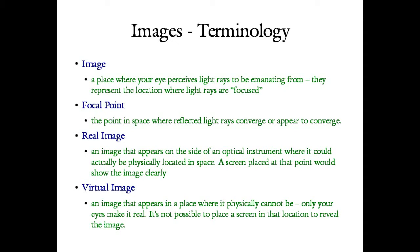A real image from a mirror is one that appears on the side of the optical instrument where it could actually be physically located in space. If you were to put a screen or a camera at that point, you could actually show the image clearly. Real images from mirrors appear to be located on your side of the mirror — there are images formed by certain kinds of reflective surfaces that appear to hover outside the physical boundaries of the mirror on your side. For lenses, real and virtual images are defined similarly, but there are some subtle differences we'll get to when we talk about thin lenses.